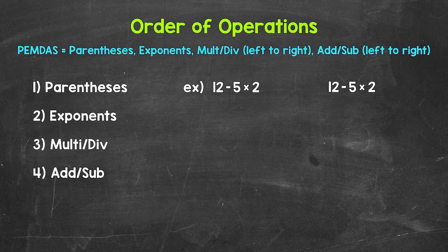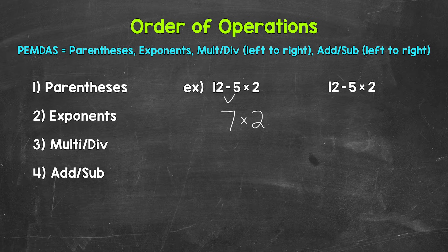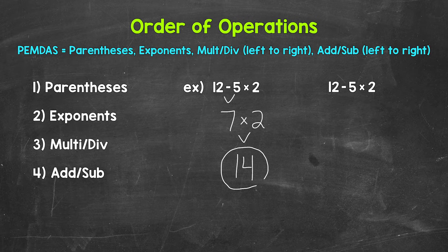Well, 12 minus 5 is 7. Bring down everything we did not use. So the multiplication sign and the 2. Now we have 7 times 2, which is 14.